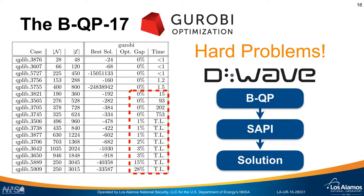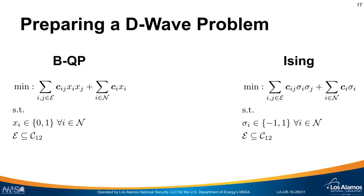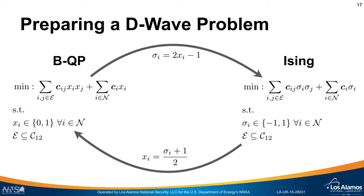Before I can show you the D-Wave results, we need to understand a bit more about how you get a problem into the D-Wave machine. The D-Wave hardware does not actually solve a binary quadratic program directly — it solves what's called an Ising model, where the variables take values minus one and one. Fortunately, there's a simple linear transform which can move a binary quadratic program into an Ising model and back, so this presents no significant difficulty.